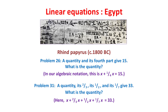The first of these, problem 26, asks for a quantity which, together with a quarter of it, gives 15. Or in our algebraic notation — which they didn't have — x plus a quarter x equals 15. The second equation asks for the quantity which, together with two thirds of it, one half of it, and one seventh of it, gives 33, and we can rewrite this algebraically. There are several similar problems on this part of the papyrus, which suggest it may have been used for teaching.